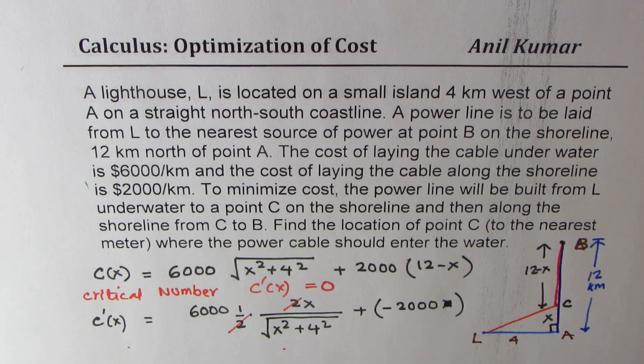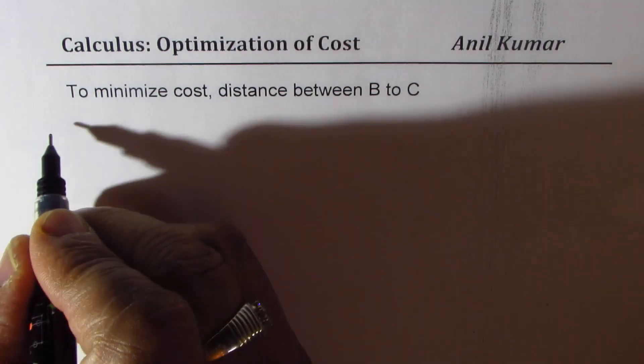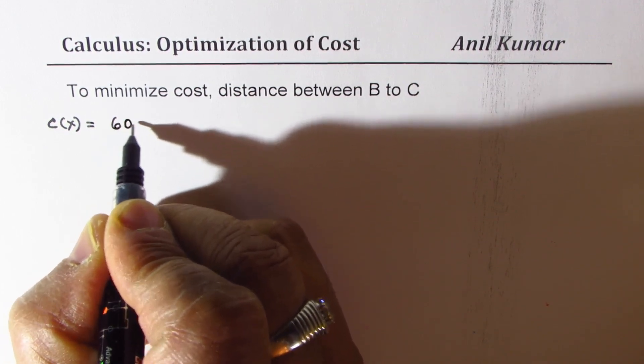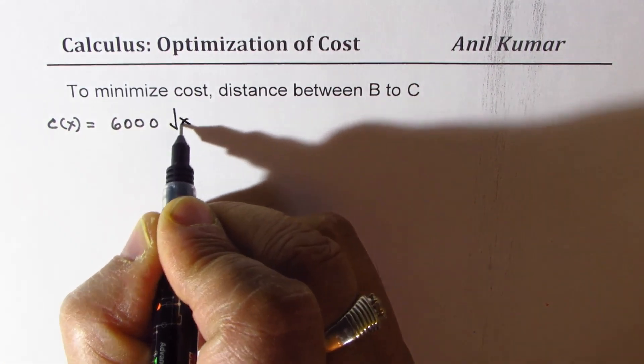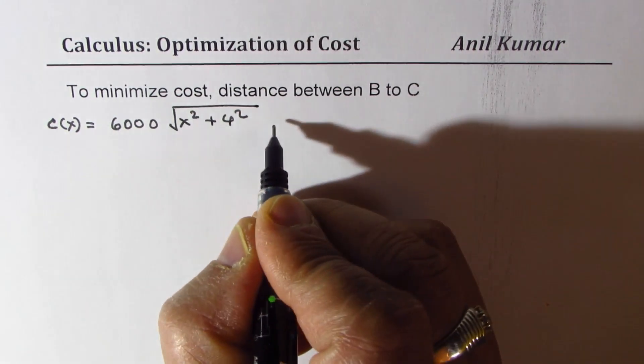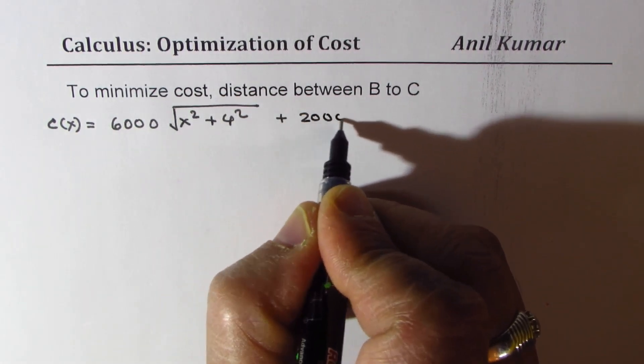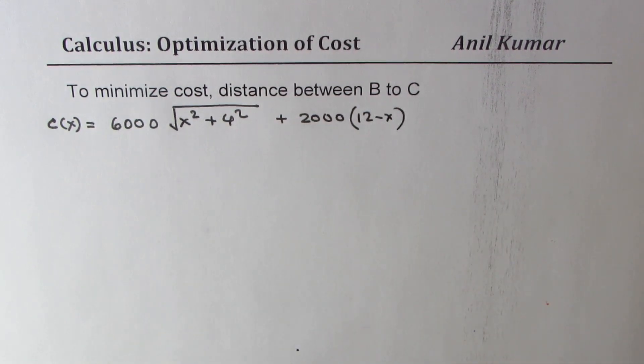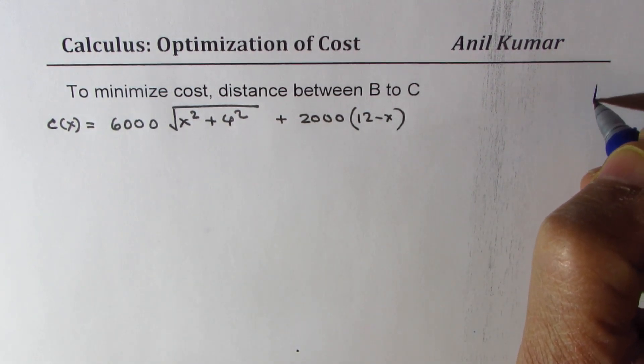Let me rewrite the cost function. Cost function was 6,000 square root of x square plus 4 square, which is 16, plus 2,000 times 12 minus x, where we are looking into this shoreline.